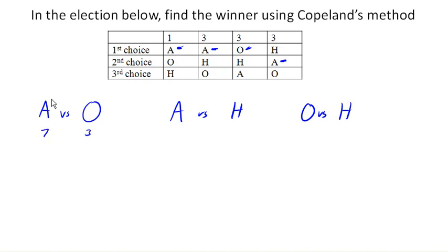And so A wins that pairwise comparison. In Copeland's method, we assign points - you earn 1 point every time you win a comparison, and you earn half a point if you tie a comparison. So in this case, A just earned 1 point.